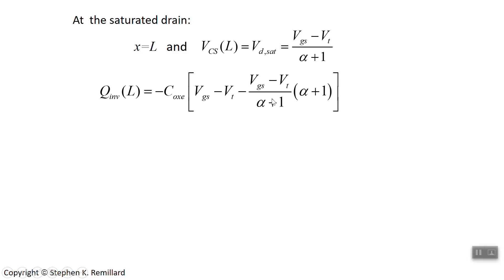Put that in this expression for the inversion layer charge. Vgate source minus Vthreshold, which always goes together, right? Vgate source minus Vthreshold always goes together, because you don't get any charge in the inversion layer until you reach the threshold. But now this Vcs times alpha plus 1, let's replace Vcs with this expression. Then there's still the times alpha plus 1. It only takes a few seconds to realize you're looking at 0. Everything's canceling out.